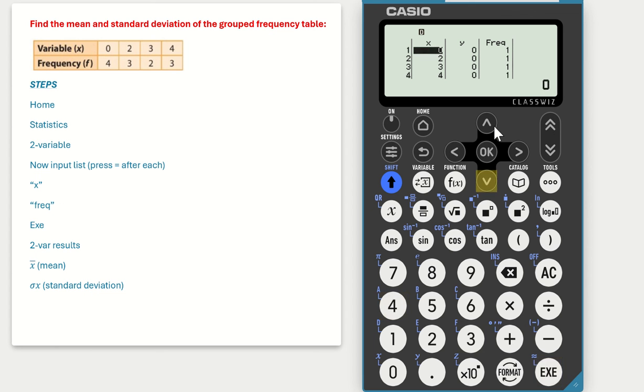When you're finished with the X, scroll back up to the top. We don't input any data in the Y column, we come over to the frequency.